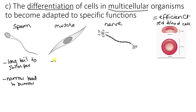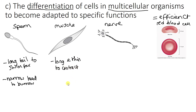The muscle cells then — they are long and thin. And this means that there is lots of space to contract, because the job of a muscle cell is to contract our muscles.